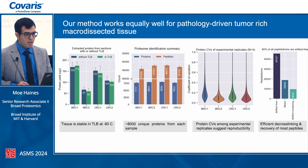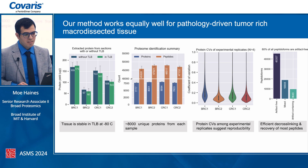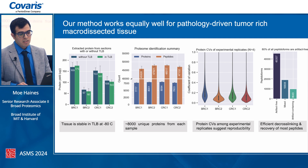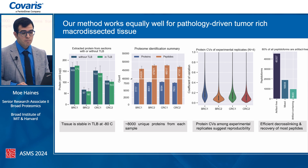For macro-dissected tissue, we're seeing almost 8,000 proteins from each injection, and peptide depth of almost 50,000 IDs per sample, consistent with previous observations. Plotting protein CVs as violin plots to measure reproducibility across four samples, the protein abundance median CV before normalization is under 0.2 for all tissue types.